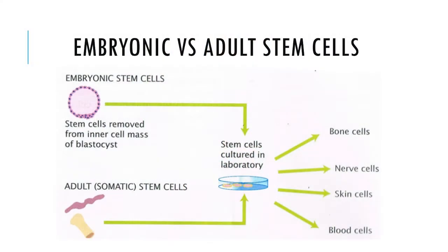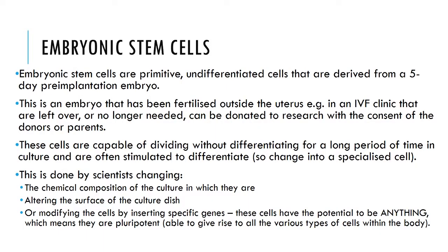Hey guys, welcome back. For this week's video I will be distinguishing between embryonic stem cells and adult stem cells. Embryonic stem cells are primitive undifferentiated cells that are derived from a five-day pre-implantation embryo — an embryo that has been fertilized outside the uterus, for example in an IVF clinic. Those that are left over or no longer needed can be donated to research with the consent of the donors or parents.